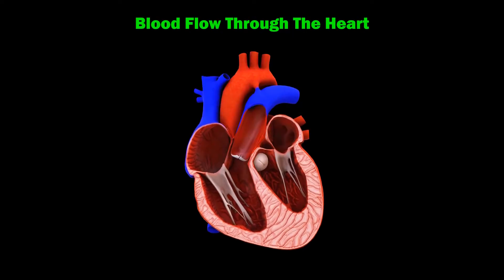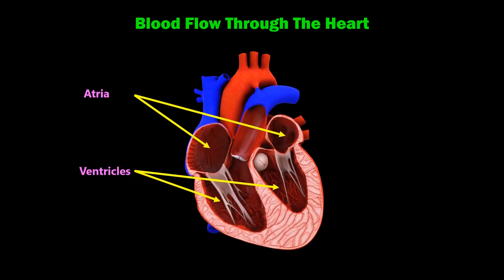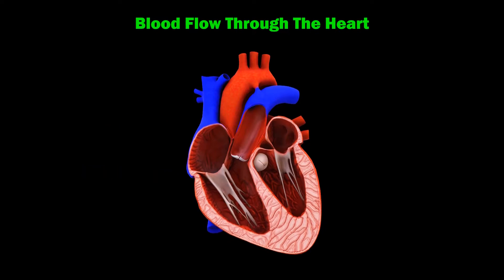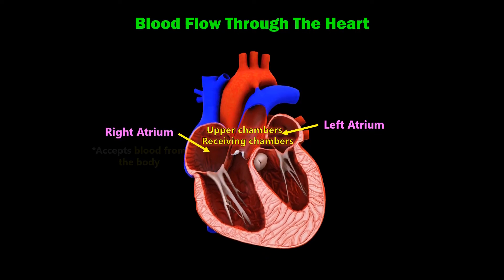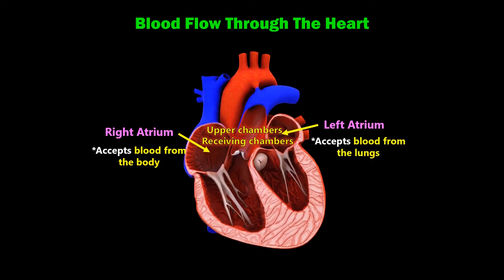The human heart has four chambers: the two ventricles and two atria. Atria is the plural form of atrium. The right and left atriums, which are the upper chambers, are the receiving chambers of the heart. The right atrium accepts blood from the body, while the left atrium accepts blood from the lungs.